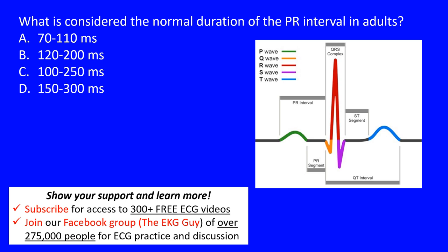This question asks: what is considered the normal duration of the PR interval in adults? Note that adults differ from children, so that's one thing to keep in mind. These are values you want to retain to memory.